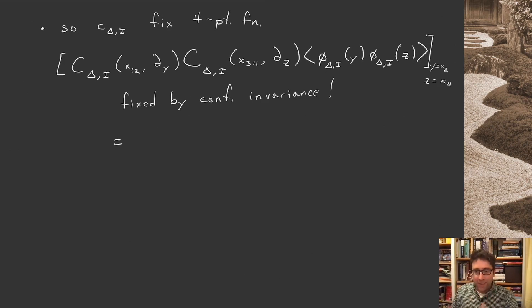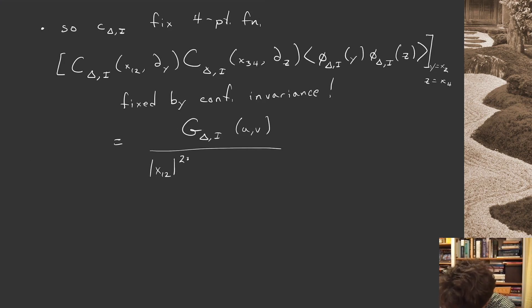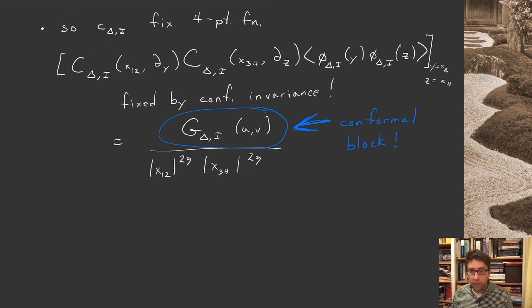Instead of writing this huge expression all the time, let's just try to simplify our notation a little bit. Let's call this g delta i of cross u and v over this pre-factor x1,2 that we had in the four-point function, 2 eta x3,4, 2 eta. And this object in the numerator, this g delta i of u and v, this is what we call the conformal block. That's what we were out to define in this lecture.